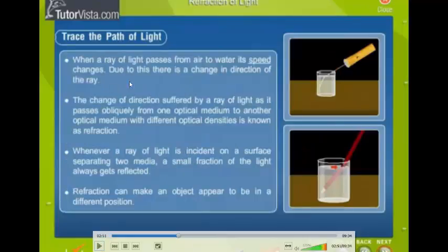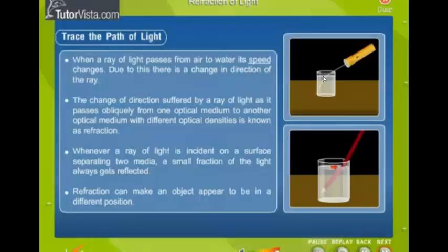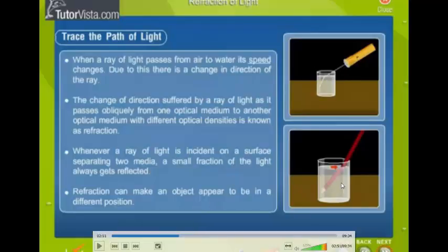So let's just go through what we've learned so far. When a ray of light passes from air to water, its speed changes. Why? Because of the different optical densities. And this will cause a change in the direction of the ray. This change is caused by the different optical densities. Whenever a ray of light is incident on a surface, we have a small fraction of light that is reflected. We generally can't see it but there is a tiny bit that is reflected.